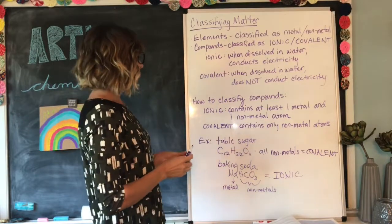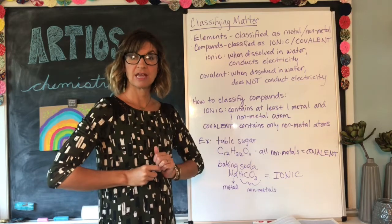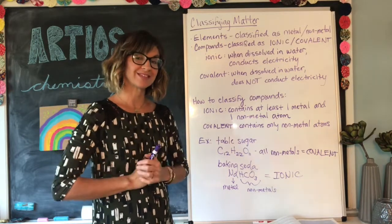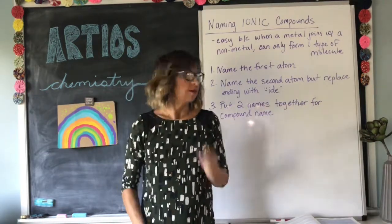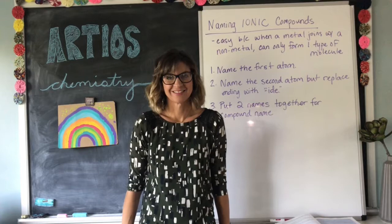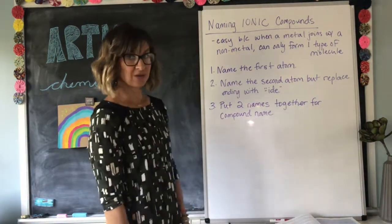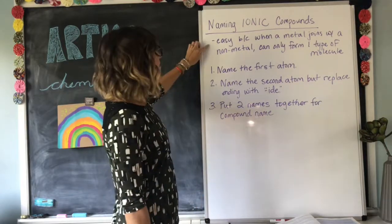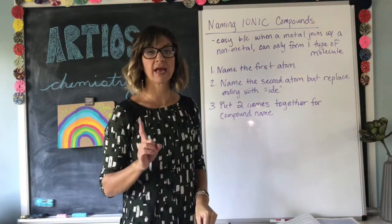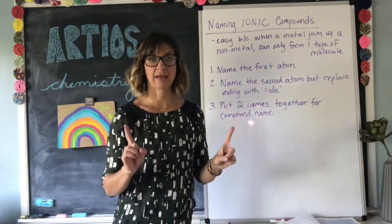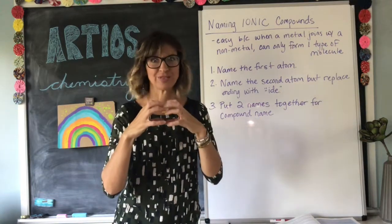So that's how you classify matter. Now we're going to talk about how to name these different compounds. Naming ionic compounds. Naming ionic compounds is easier because when a non-metal atom joins together with a metal atom, only one type of molecule can form every time — they always do it the same way.